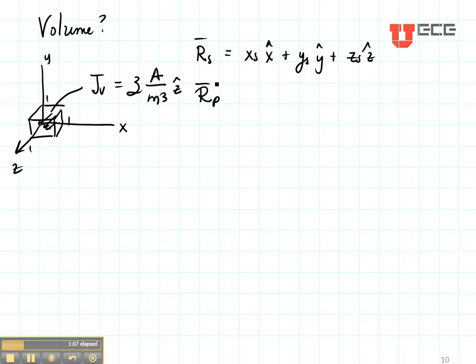Let's find where we want to find the magnetic field. Let's suppose that I want to find H right here out on the X axis at the point where X is 4, Y is 0, and Z is 0.